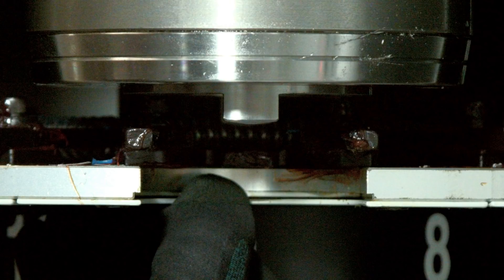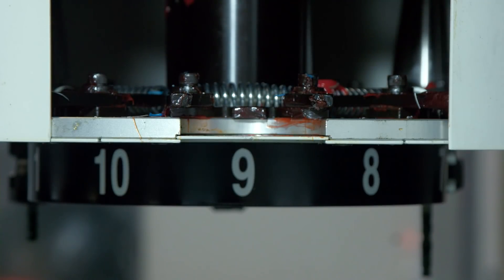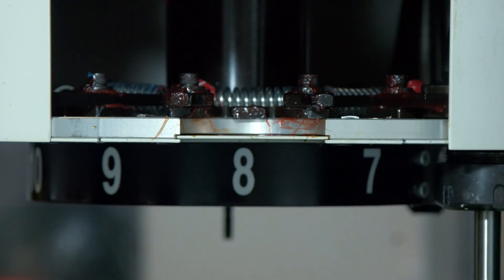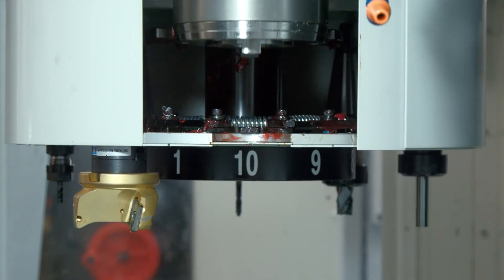If not, repeat the alignment process. Now once the spindle orientation is aligned correctly, test without tools. Once you're satisfied, test the tool changer with tools for proper functions.